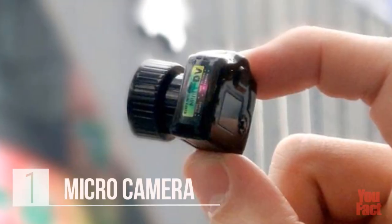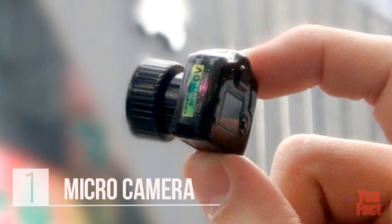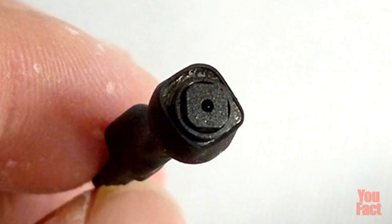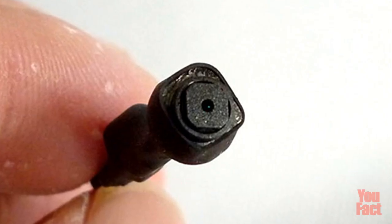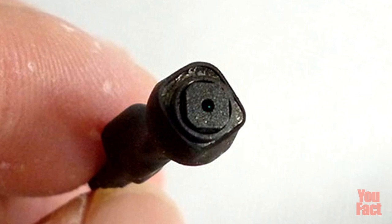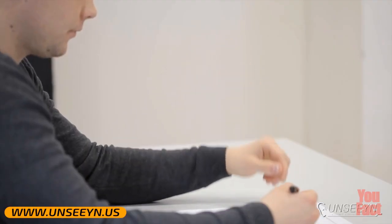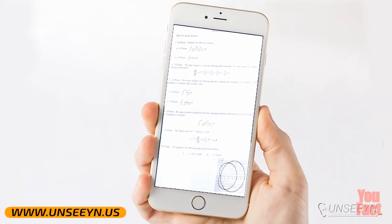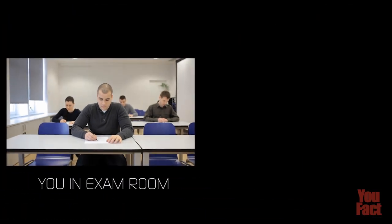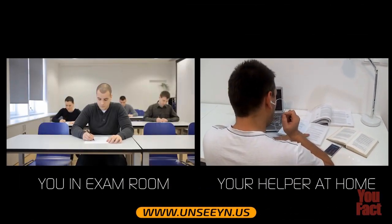And in my opinion, the coolest gadget that we will review now is a hidden camera that can be fixed on the clothing and can transmit streaming video to your assistant or can take pictures of your tasks. The camera is fixed either on the spot of a button or under the sleeve and when the teacher is not around, you have a couple of seconds to take pictures that will immediately be transmitted to your assistant.